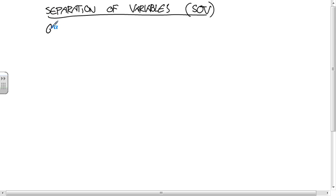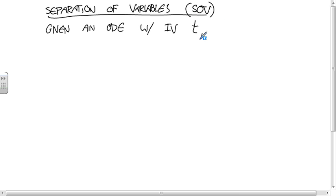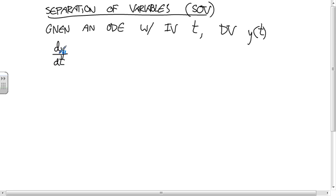The way you do it is like this: given an ordinary differential equation with independent variable t — because in dynamics that's the independent variable, though this is just as true if it's x, y, q, or whatever — and with dependent variable y, meaning you're trying to solve for a function y of t, you're looking for equations of this form: dy/dt is equal to some function of y times some function of t.